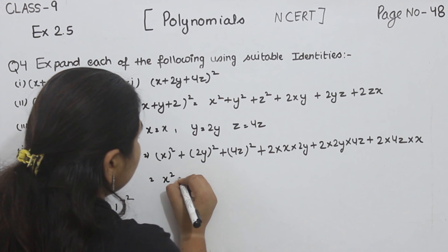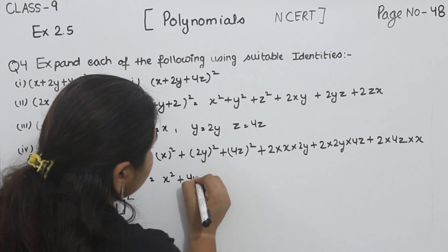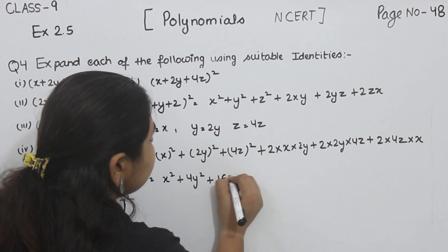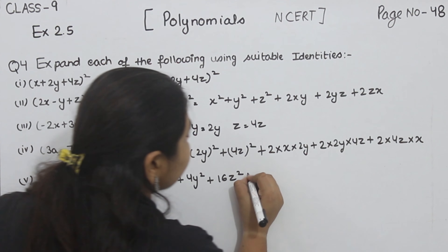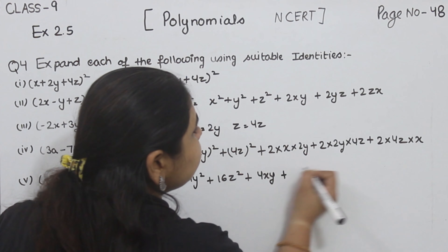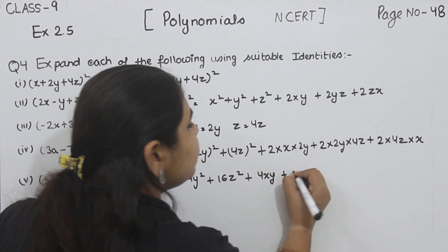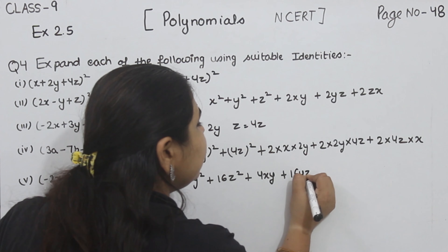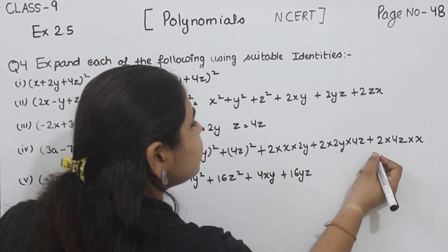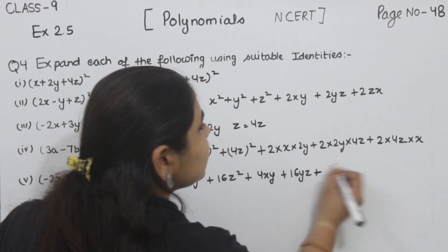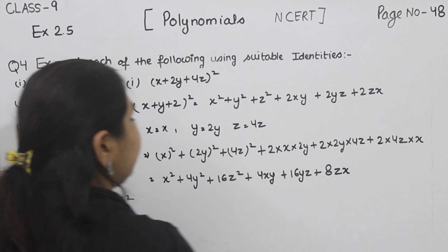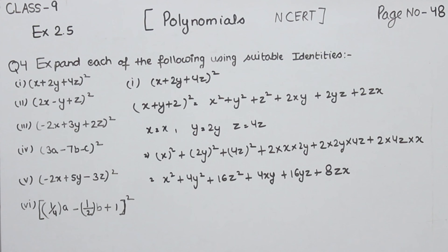Now we are going to solve it. X square plus 2 squared is 4, so 4Y square, plus 4 squared is 16, so 16Z square, plus 2 times 4 is 8, so 8XY, plus 16YZ, plus 4 times 2 is 8, so 8ZX. This is part 1.